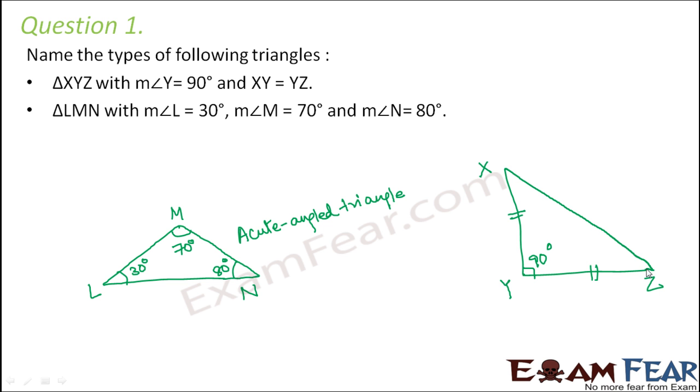So what type of triangle is this? So here there is one angle 90 degrees. So this has to be a right angle triangle. At the same time, two sides are also equal. So this is an isosceles triangle. So this is right angled isosceles triangle.